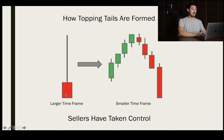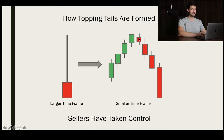Looking at a topping tail — we have a red bar, meaning price closed at a lower price than at which it opened. Price opened right here, rallied all the way up to make new highs — that's where the wick shows the absolute high. From there, the sellers took control and brought it all the way back down to produce a low at the bottom of the body. So this is a very bearish candle: it started bullish, but right at that high, the sellers showed up and brought it all the way back down, producing this topping tail.